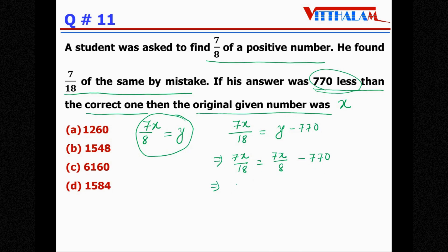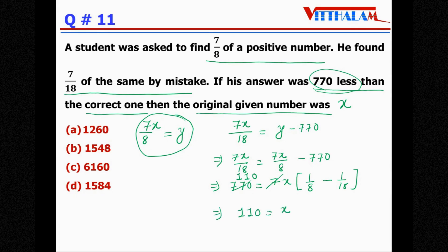Taking 770 to the left side: 770 = 7x(1/8 − 1/18). Taking LCM of 8 and 18, which is 144: 18 − 8 = 10, so 770 = 7x × 10/144. The zeros cancel, giving x = 11 × 144/10 × (simplified) = 11 × 144. So x = 1584.